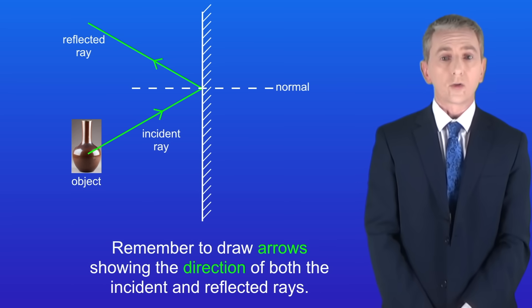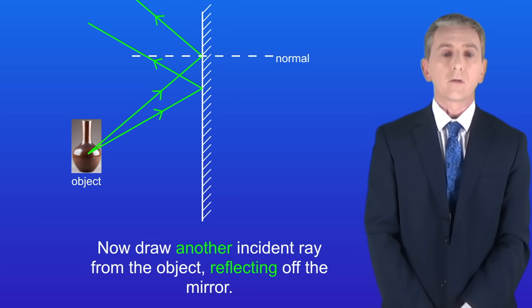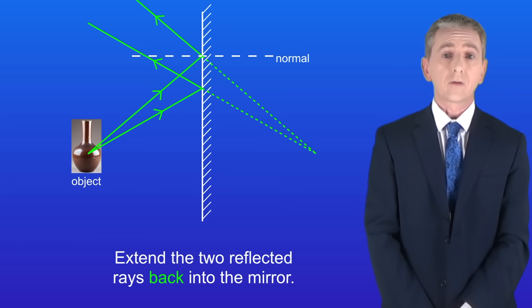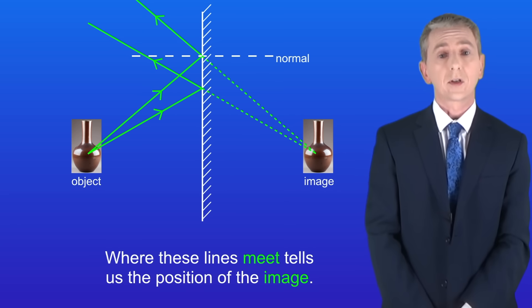Remember to draw arrows showing the direction of both the incident and the reflected rays. Now draw another incident ray from the object reflecting off the mirror like this. Finally extend the two reflected rays back into the mirror. Where these lines meet tells us the position of the image.